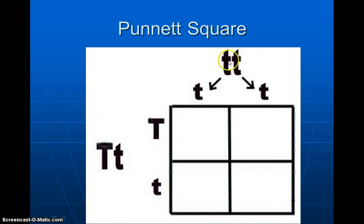We have the two traits here, and they get put on top, and then we have the other trait here, and that goes there. We're going to talk about the types of traits that these are, and then we're going to talk about how to actually fill the Punnett square in.